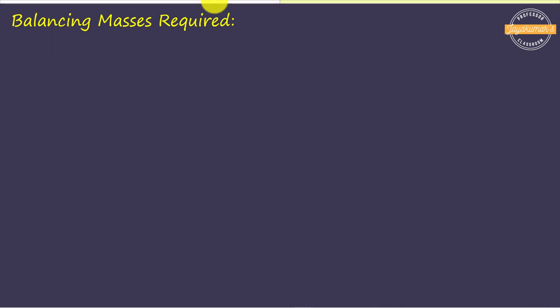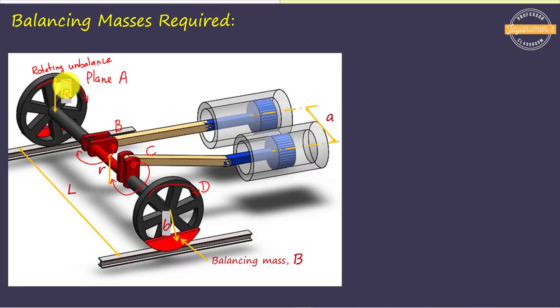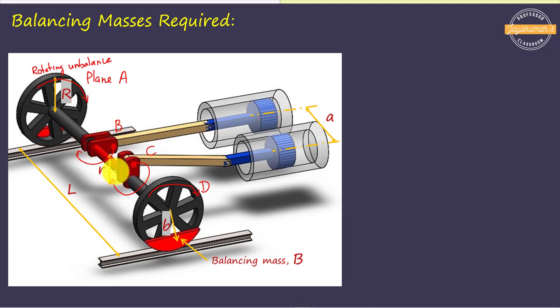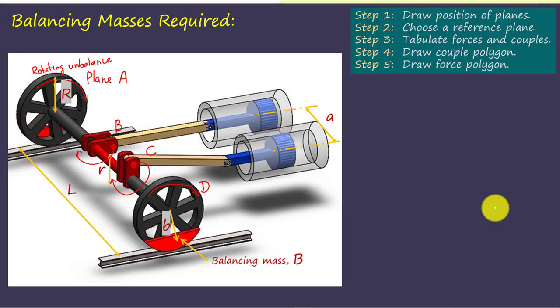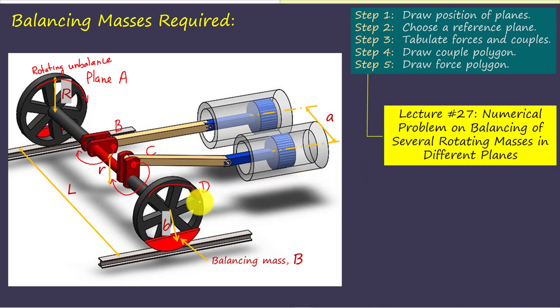In order to determine the value of hammer blow, we should know the values of balancing masses added at the two driving wheels. We have unbalance in two driving wheels as well as in the planes of two cranks — unbalance in four planes: plane A, plane B, plane C, and plane D. Our aim is to determine the balancing masses to be added so that the two-cylinder locomotive system is in balance. This problem is now equivalent to balancing of four masses rotating in different planes.